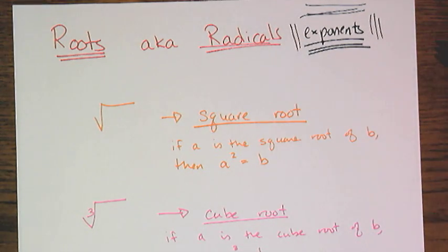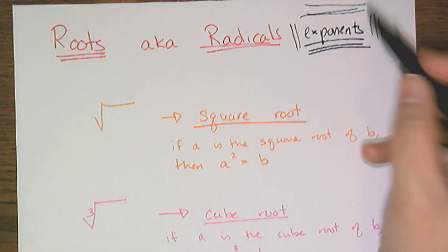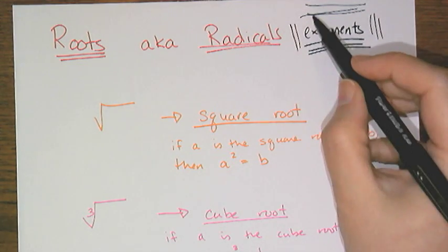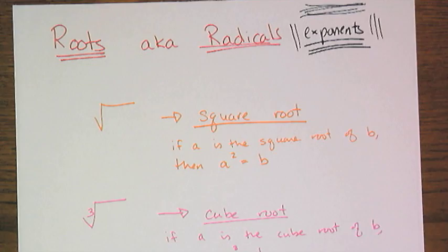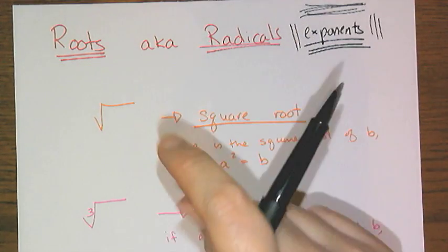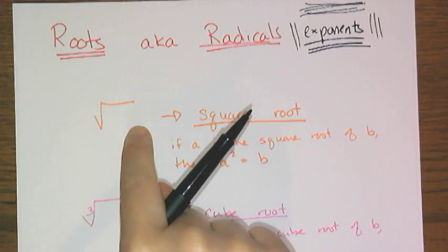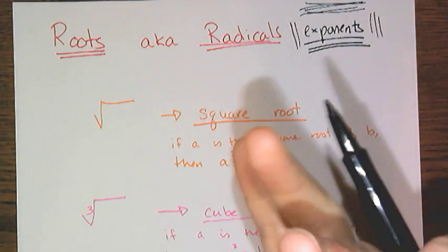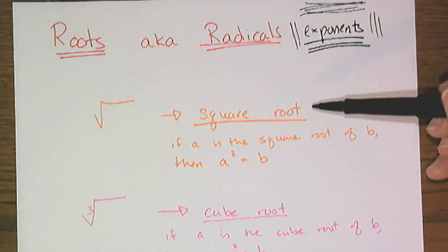One thing that you have to know in terms of order of operations is that a radical or a root is the same thing as an exponent. They can be interchanged. So if I have something written as a radical, I can rewrite it as an exponent. Let's start with square roots.